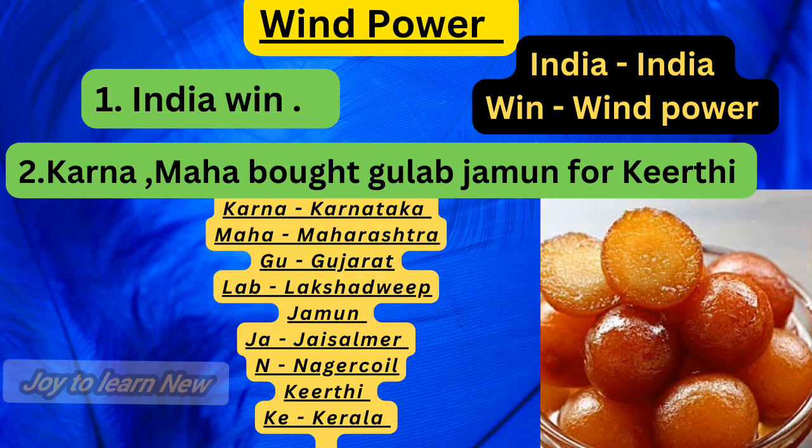Wind power shortcut: 'India wind' — India has great potential of wind power. Second shortcut: Karna refers to Karnataka, Maha refers to Maharashtra, GU refers to Gujarat, LA refers to Lakshadweep. These are regions well-known for effective use of wind energy in our country.